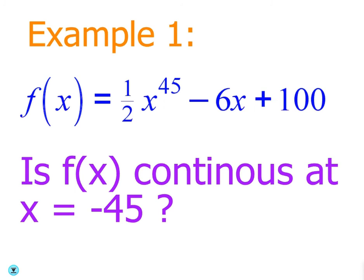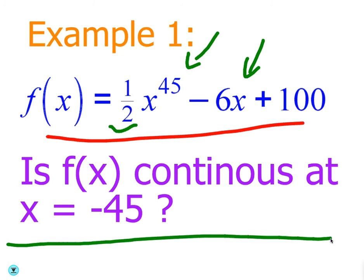And you don't have to write all these down. This is pretty simple stuff. Is this a polynomial? It is. You were probably looking at the coefficient, right? For a polynomial, the coefficient can be anything. What we're going to look at is the exponents. As long as the exponents are whole numbers, then it's a polynomial. So we can answer this question. What do you think? Is it continuous at x equals negative 45? Yeah. It's going to be continuous everywhere because it's a polynomial. And polynomials are continuous all real numbers.